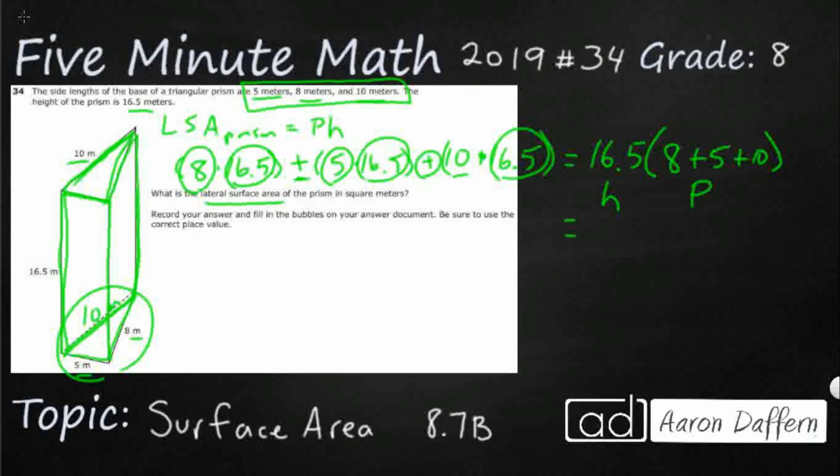So let's just go ahead and do that. 16.5 times—8 plus 5 is 13, so that's 23. That's it: 16.5 times 23. We've got our calculators that we can use on this test, so let's go ahead and just do that. That's going to equal 379.5.